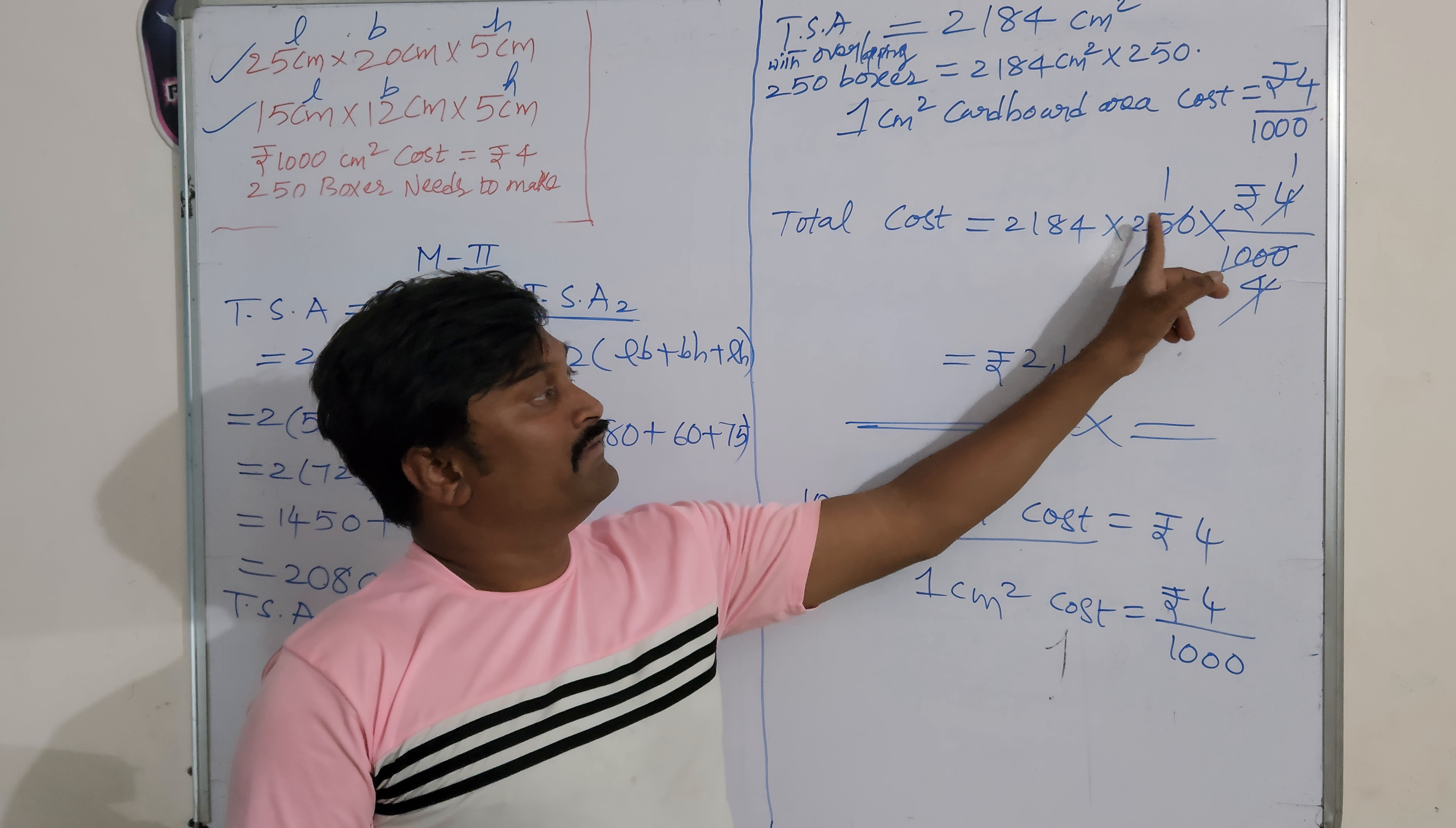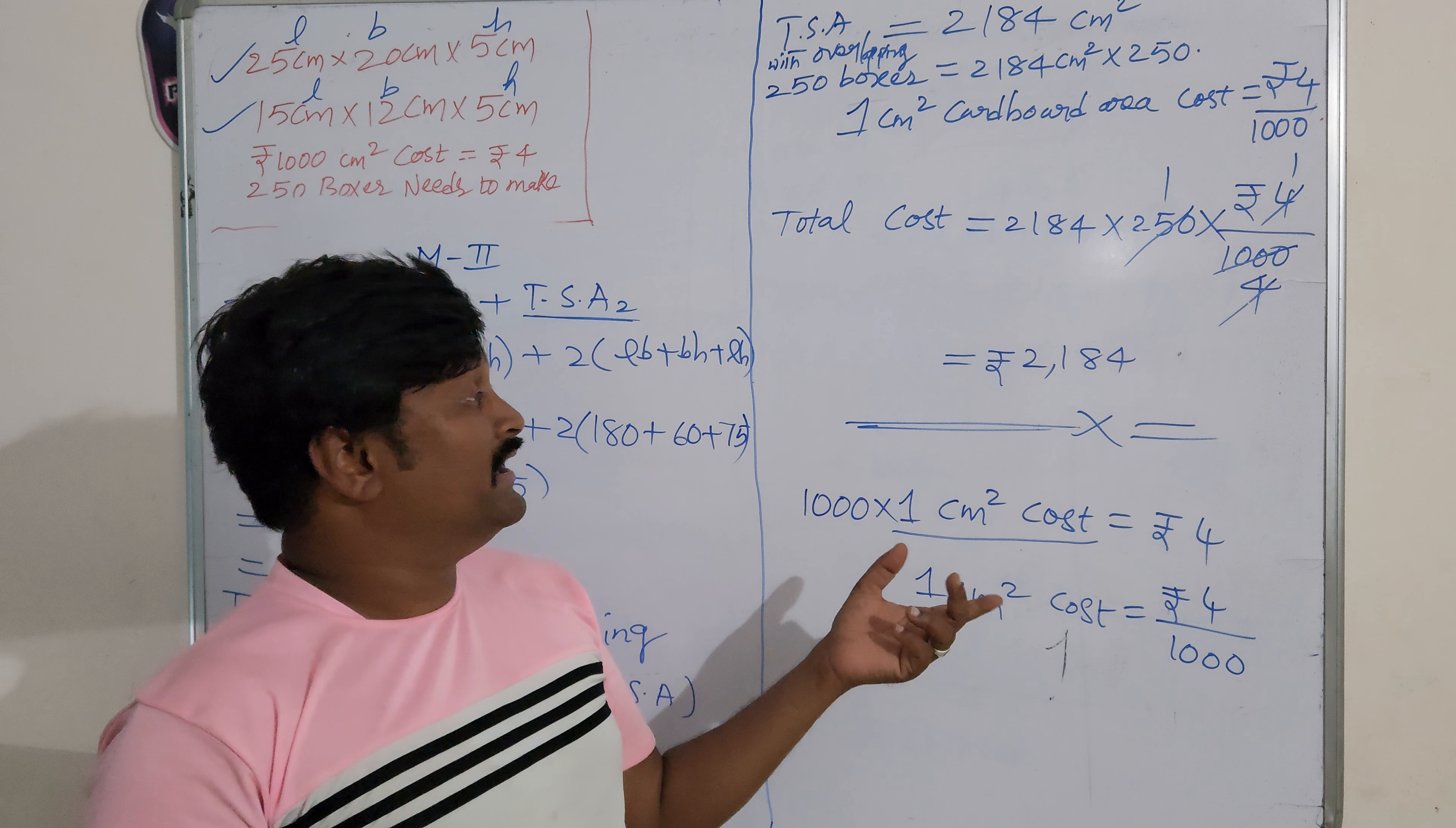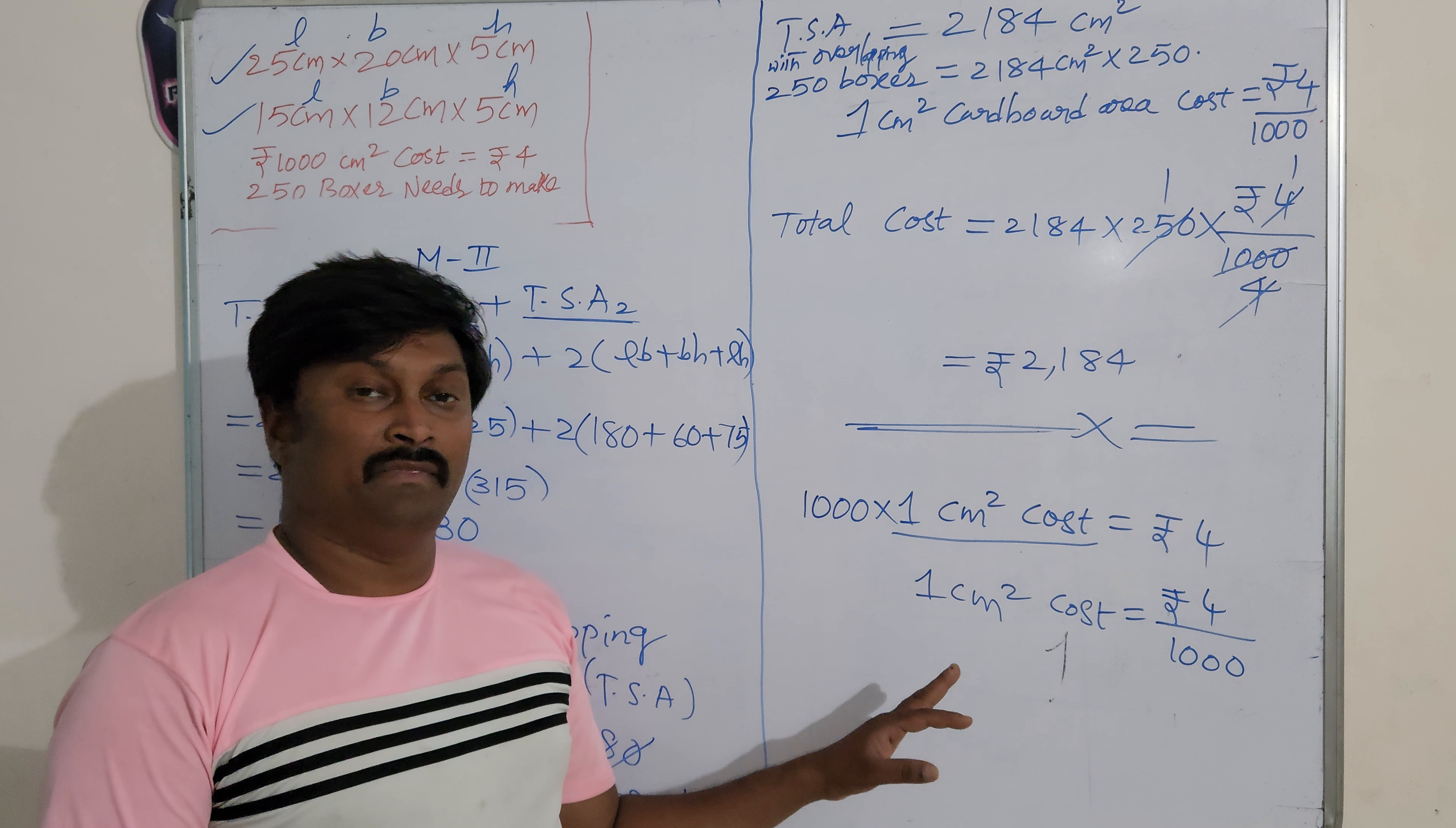2,154 upon 1000 - four and four get cancelled, you get only 2,184. So at last, what is the total cost to make 250 boxes of each kind? It is 2,184 rupees. I hope your doubt is clarified. May God bless you.